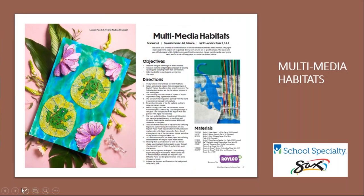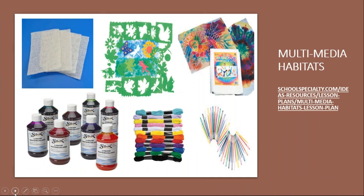Here we have one more of my lessons entitled Multimedia Habitat, sponsored by Royal Co. This lesson uses a variety of tactile materials to create a textured multimedia animal habitat. The paper mesh used in this project would be painted, drawn, sewn on, and cut to specific shapes. This lesson also uses diffusing paper, which highlights the use of liquid watercolors. Nature stencils can be used on the mesh and/or on the diffusing paper to create the desired habitat. This lesson is also featured as a Teachable webinar. Key materials include paper mesh, Nature stencils, diffusing paper, Saks liquid watercolors, embroidery floss, and plastic lacing needles.